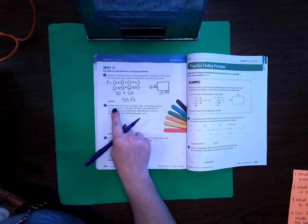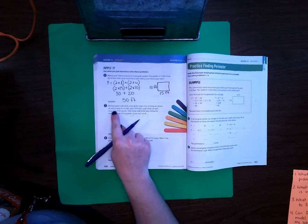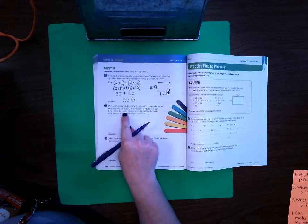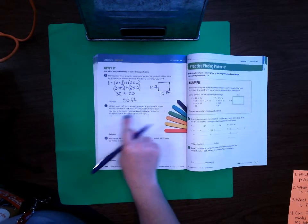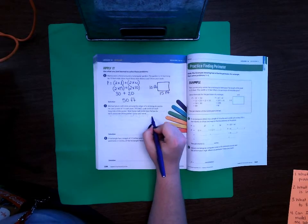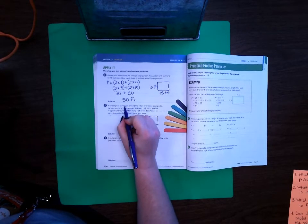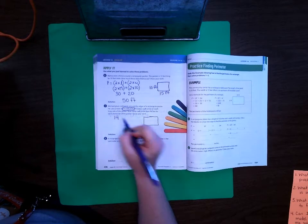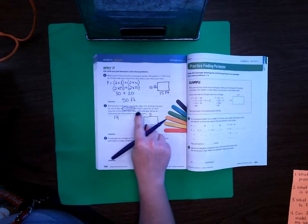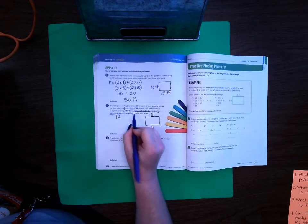Now on this one, Michael glues craft sticks around the edges of a rectangular poster. He uses a total of 14 craft sticks. He uses 5 craft sticks on each long side of the poster. How many craft sticks does he use for each short side of the poster? Show your work. Okay, so we have a poster, a rectangular poster, and he uses 14 craft sticks total. He uses 5 craft sticks on the long sides, each of the long sides. How many craft sticks does he use for the shorter sides? So that's our question.